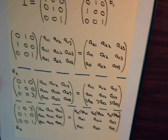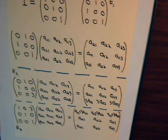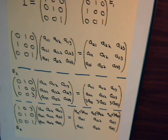Gaussian elimination and the row echelon technique are just different names for the same thing. Essentially, when we perform those row manipulations, we are effectively multiplying the matrix by a series of elementary matrices to get it into upper triangular form or reduced echelon form.